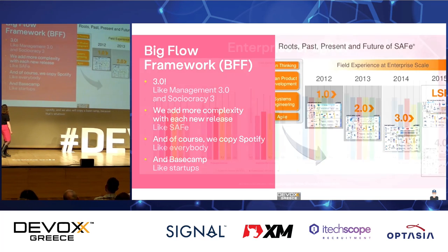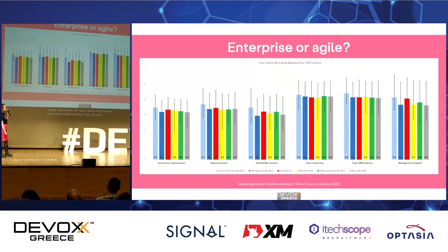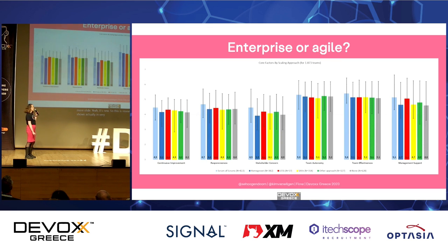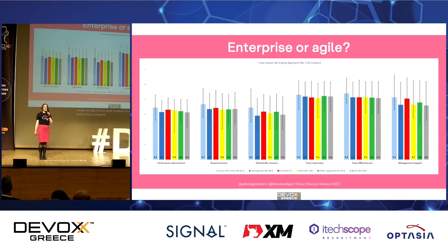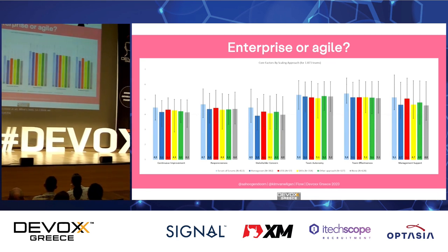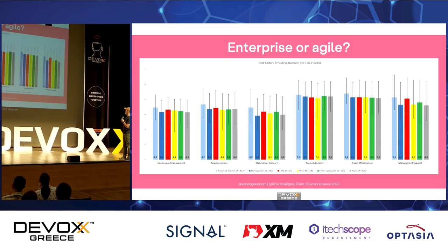So we introduced the Bigflow Framework, short BFF. We're going to start with version 3.0 because that's popular. We will add more complexity with every release like SAFe, not plot the customer in our pictures, copy Spotify, and also copy Basecamp because that's what everybody does. Research actually shows that in a comparison of every scaled Agile framework versus using none at all — none at all was best.